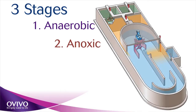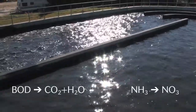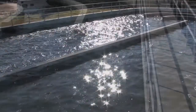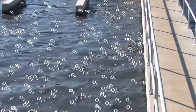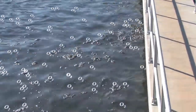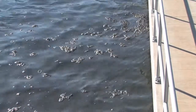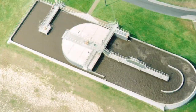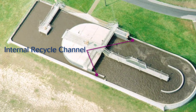Let's look at how a 3-stage process, the most common arrangement, provides both nitrogen and phosphorus removal. As carbon or BOD and nitrogen are consumed and reduced in the carousel basin, the dissolved oxygen is gradually reduced, creating a dissolved oxygen profile along the channel. With proper accelerator control, the dissolved oxygen will reduce to near zero as the flow approaches the internal recycle channel.